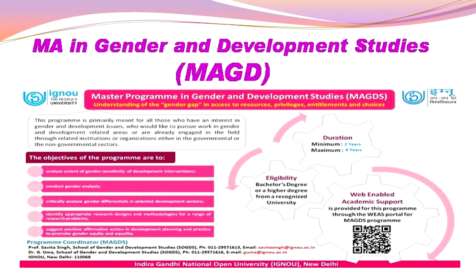The second MA we have is MA in Women's and Gender Studies. It's important to know that this MA is not exactly what you study in MA in Gender and Development Studies. This MA has very critical thinking and theoretical interventions for understanding women's issues and gender issues. You might think these are the same — why do we have two names? No, they are not the same. When you study this program, you will come to know that this MA has much more to do with more than women.